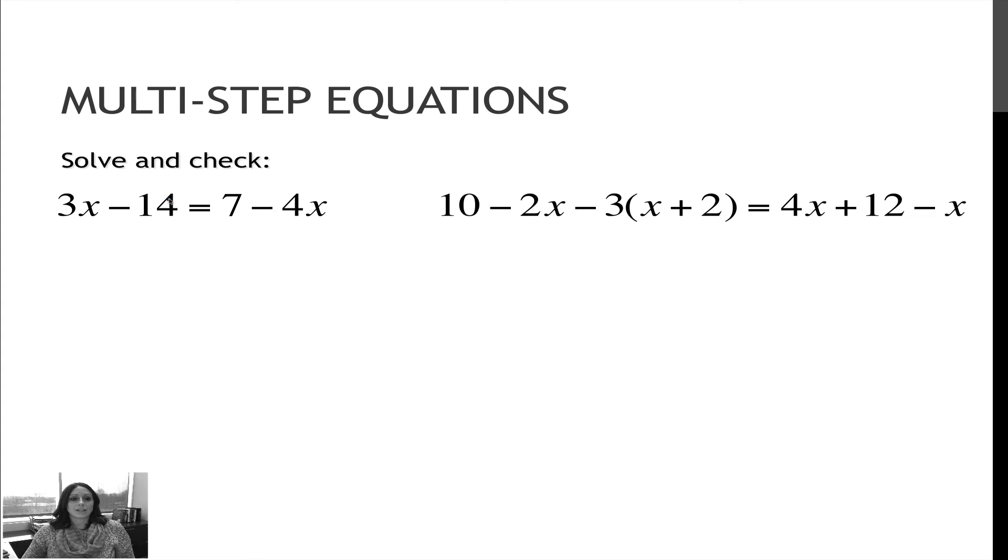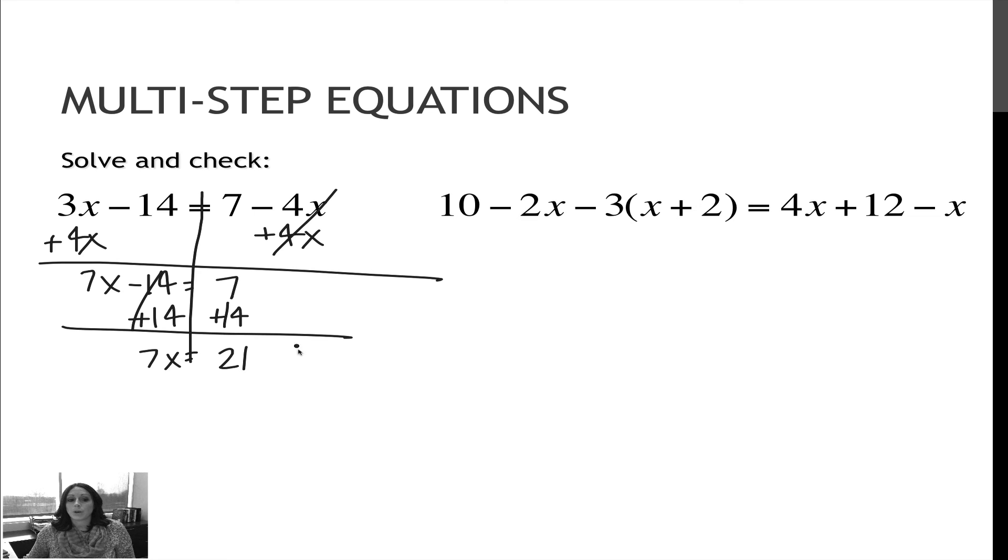Let's try a few more. These are obviously going to get a little bit more complicated. So the first one, again, I'm drawing the wall. This one's not so bad. I can choose to subtract 3x or add 4x. I'm going to choose to add 4x because I like dealing with positive numbers. So 3x plus 4x is 7x. Bring down minus 14, bring down 7. Now I'm undoing minus 14 by adding 14. On the left side, I'm left with 7x. And on the right side, I have 21. And then I divide by 7 to get x is 3. Again, I'm leaving those checks to you.